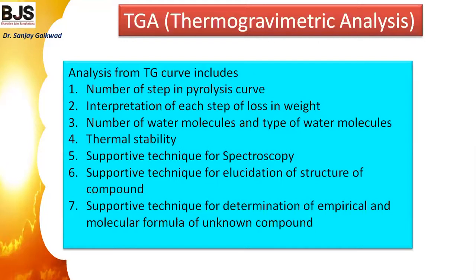The thermogravimetric curve includes a number of steps in the pyrolysis curve — one, two, or three steps. From each step, the percentage weight loss can be calculated. The number of water molecules, up to what temperature the compound remains stable — that thermal stability — can be determined from the graph. Thermodynamic stability is also calculated.